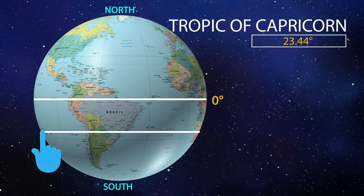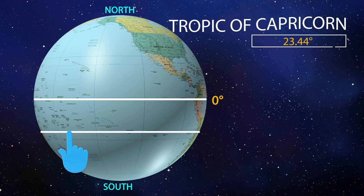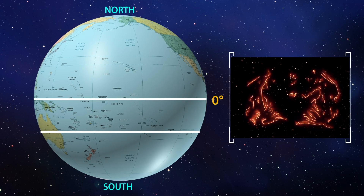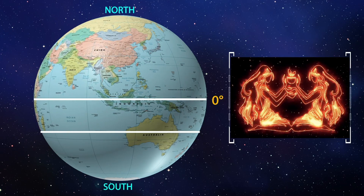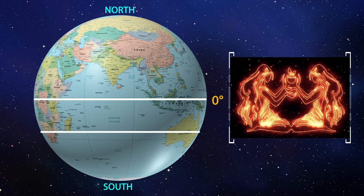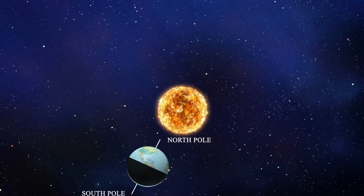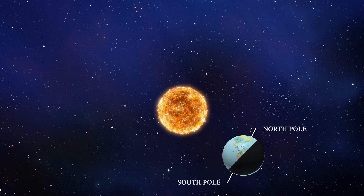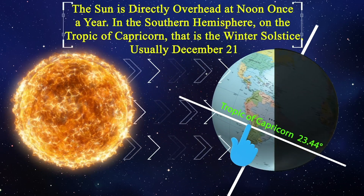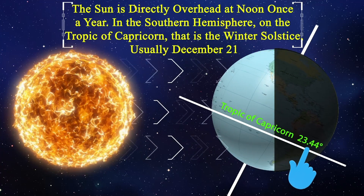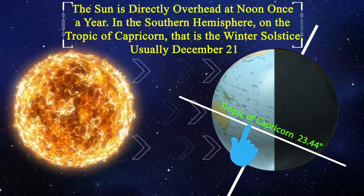The Tropic of Capricorn is the line of 23.44 degrees south latitude. It was named because when it was named, the sun passed overhead at this location at the time of year when it was within the zodiac sign of Gemini. The sun is directly overhead at noon once a year in the southern hemisphere on the Tropic of Capricorn — that is the winter solstice, usually December 21st.